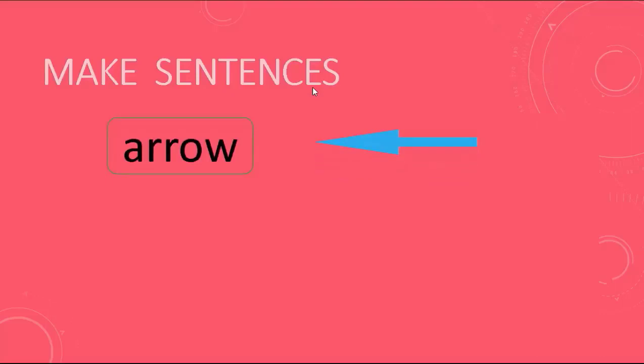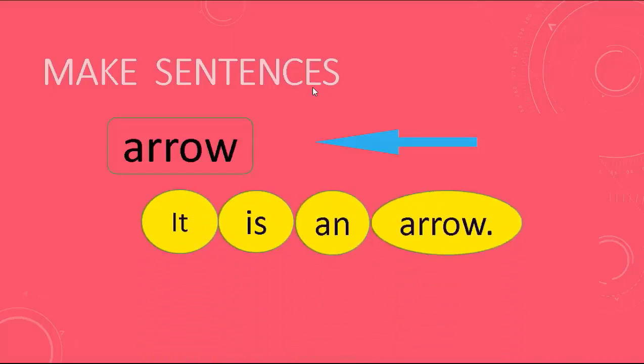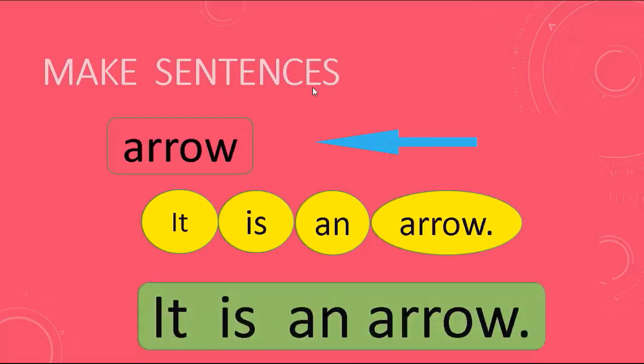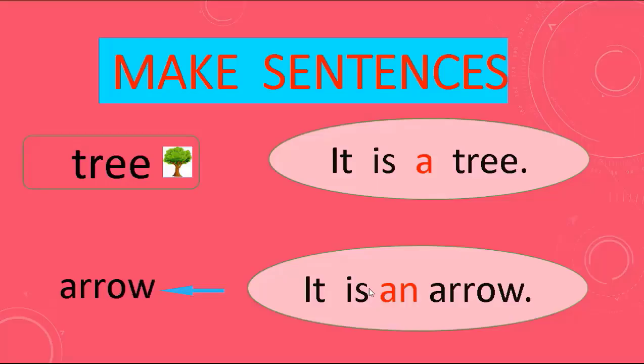This word starts with a vowel letter. It starts with A, a vowel letter. So we use 'an' in our sentence. Make a sentence with me. It is an arrow. Yes, it is an arrow. So this is all about how to make a sentence.